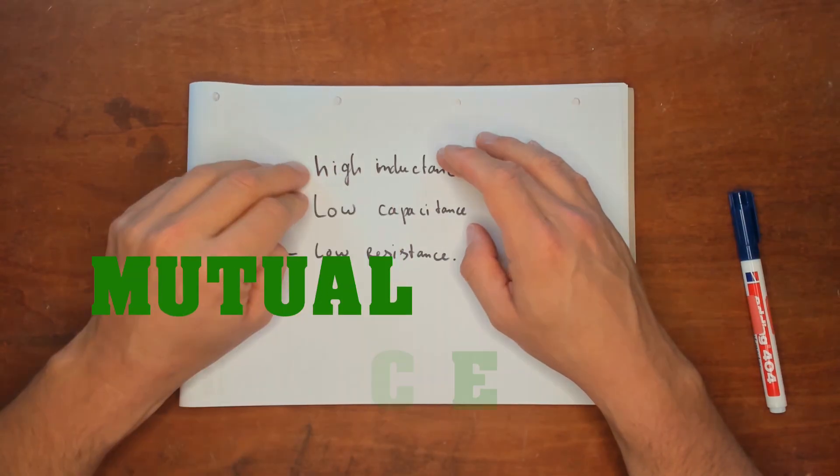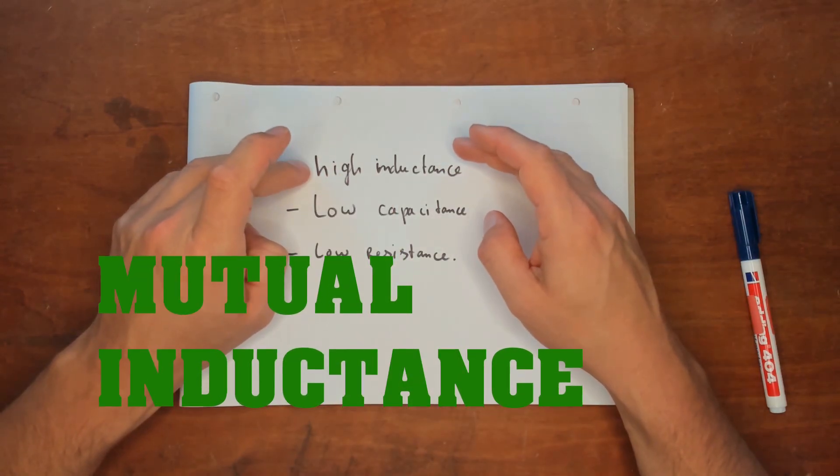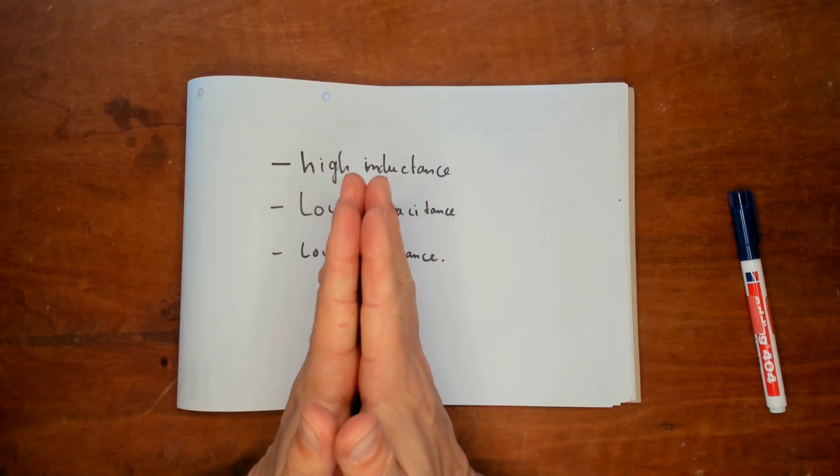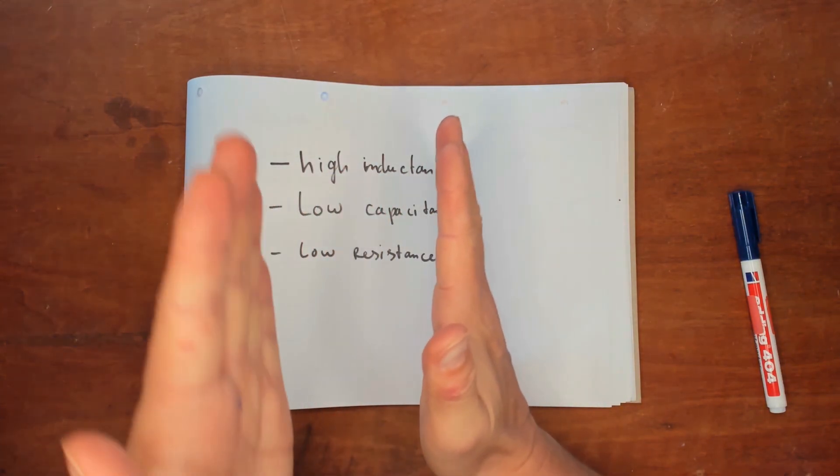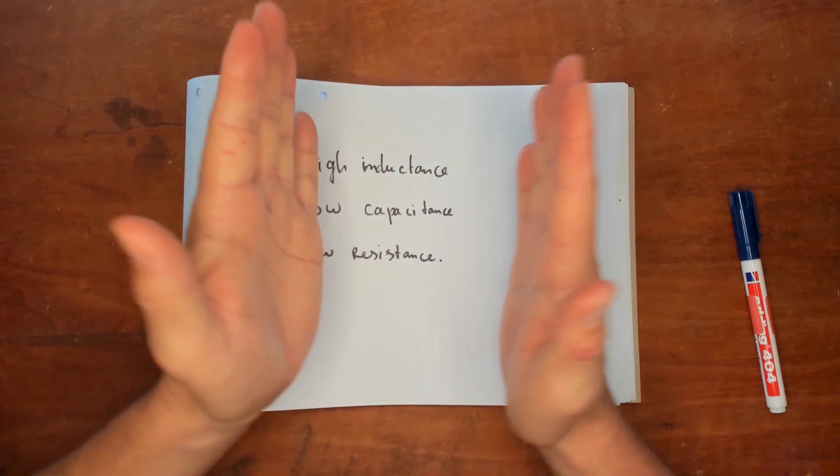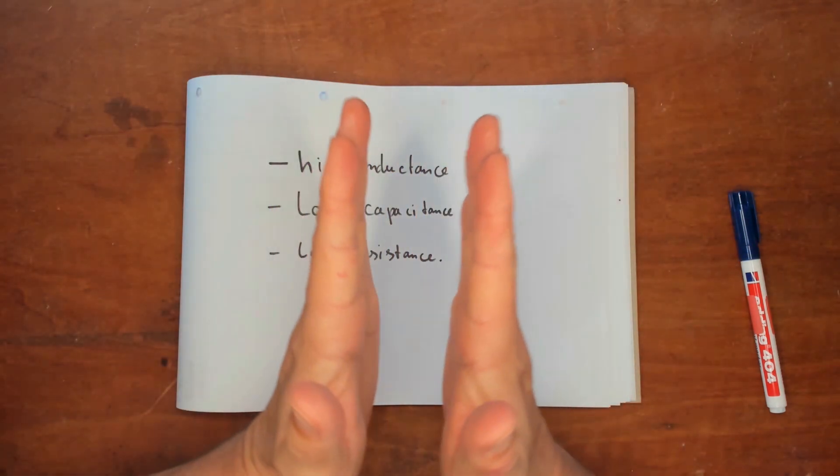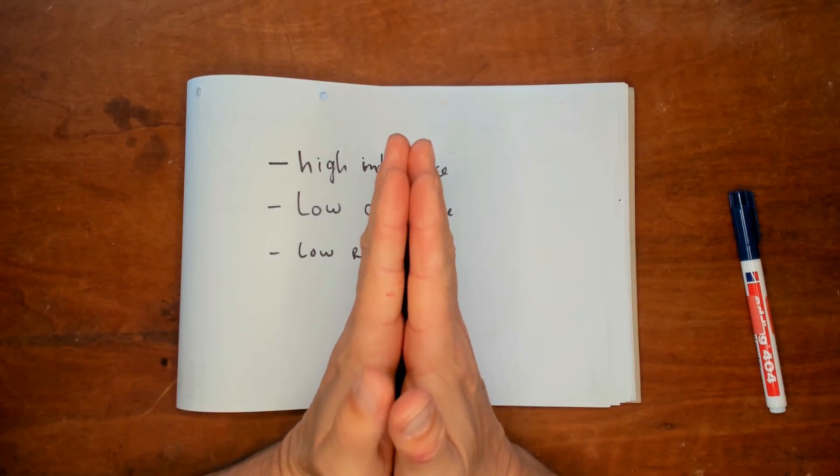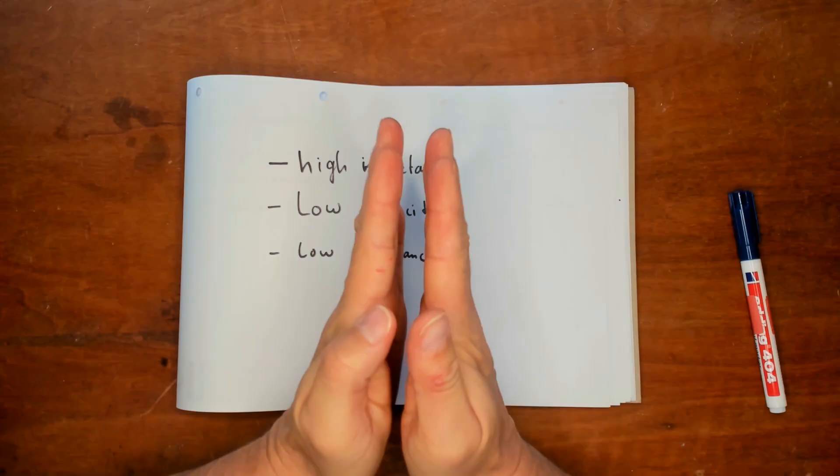There's another trick. We have mutual inductance. If we put two coils together and we hook them up in series, then the magnetic field of one coil will increase the magnetic field of the other coil. Both of the magnetic fields are joined together and they are added up. So we need a coil that has mutual inductance.